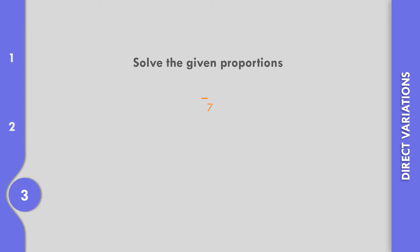How about number 3? 2 over 3 is equal to x over 7. Let us multiply 3 times 7, that is 21. So 21 divided by 3, that is equal to 7. So 2 times 7, that is equal to 14. 21 divided by 7, that is equal to 3. So it means 3 times x, that is equal to 3x.